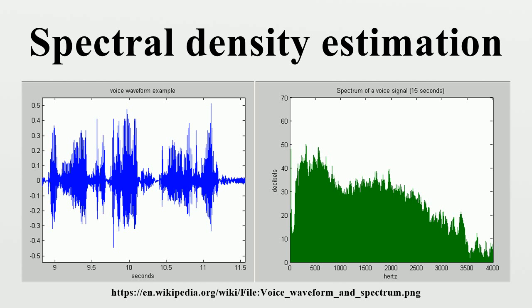Least squares spectral analysis - based on least squares fitting to known frequencies. Non-uniform discrete Fourier transform is used when the signal samples are unevenly spaced in time. Singular spectrum analysis is a non-parametric method that uses a singular value decomposition of the covariance matrix to estimate the spectral density.